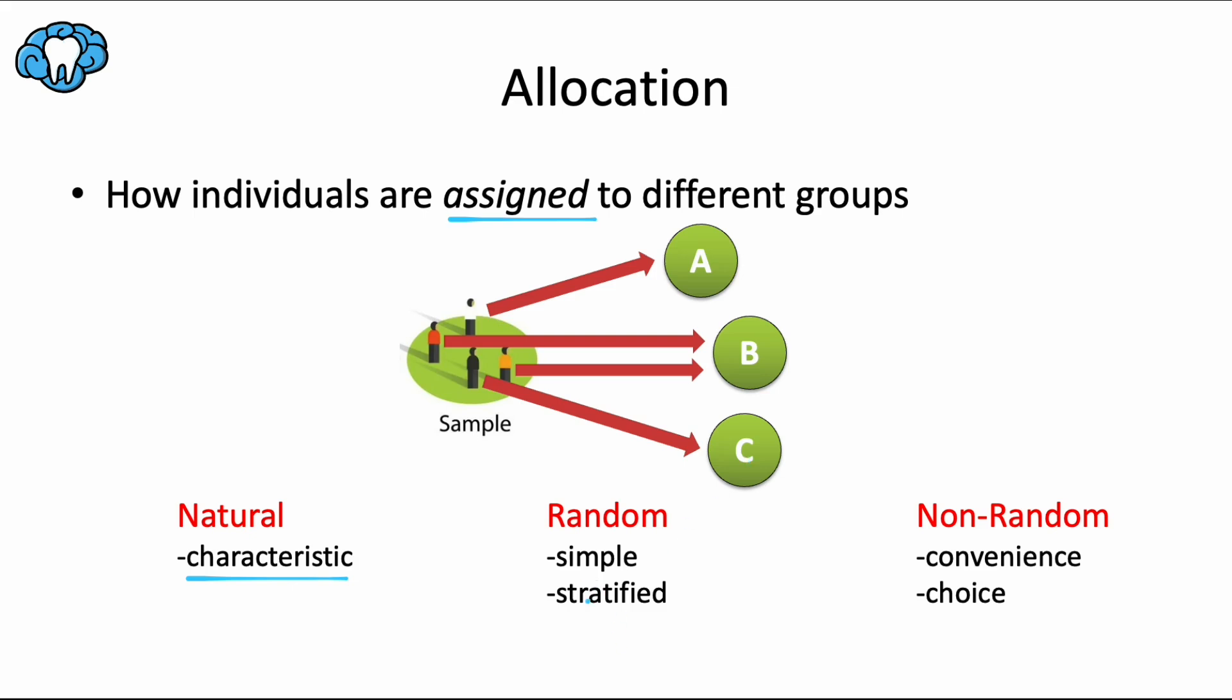Stratified randomization is basically simple randomization with one extra step. It's conducted within a homogenous group, which could be a certain age bracket or disease severity. For example, you could first take all of the males and then randomize them into groups A, B, and C using a random number generator. And then you could take all of the females who were sampled and then randomize them into groups A, B, and C.